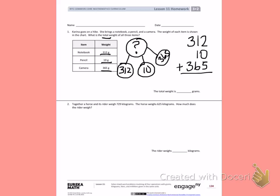So I have 2 plus 5, which is 7. 1 plus 1 is 2. 2 plus 6 is 8. 3 plus 3 is 9. So the total weight of what Karina brought was 987 grams.